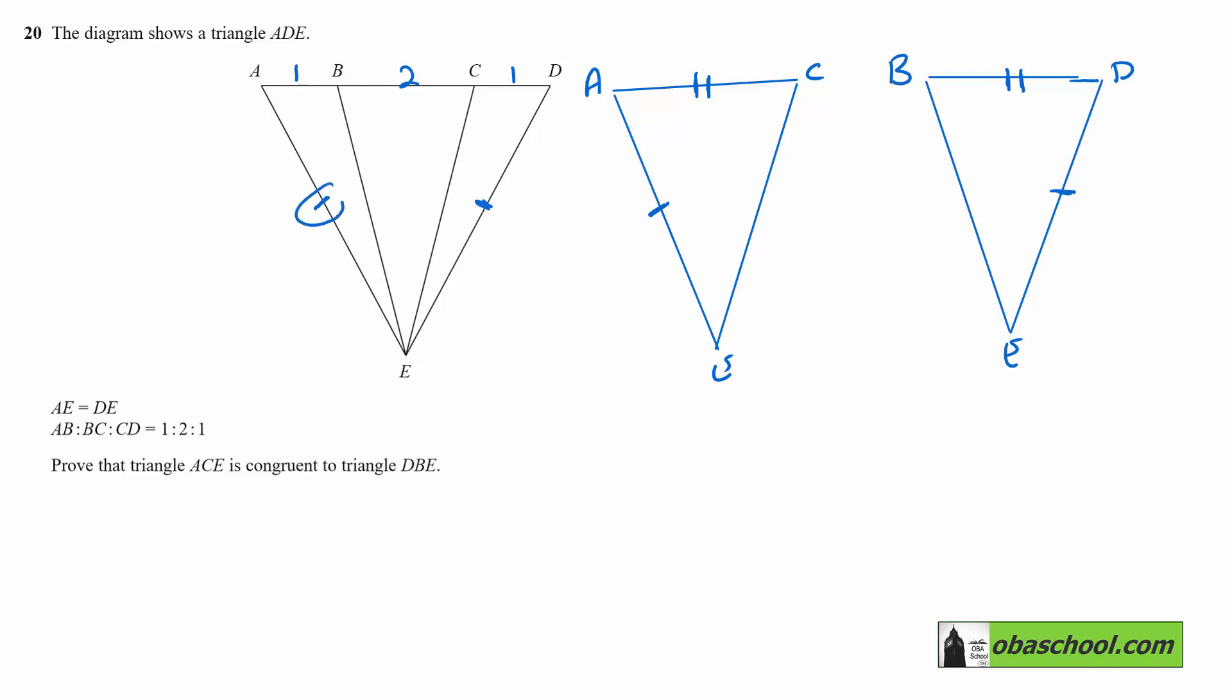Now, since these are the same length, the original triangle ADE is isosceles. And we know that the base angles of an isosceles triangle are equal. So those are equal.